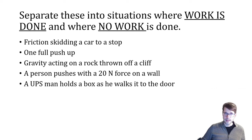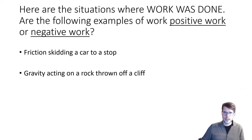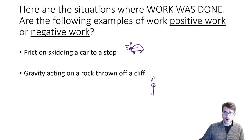Let's look at this together. The situations where work was done are: friction getting a car to a stop, and gravity acting on a rock thrown off a cliff. In the case of friction slowing the car down, the car is moving forwards and friction acts backwards — so this is an example of negative work. Whereas with the ball falling down, it's moving down and the force is down, so this is an example of positive work.